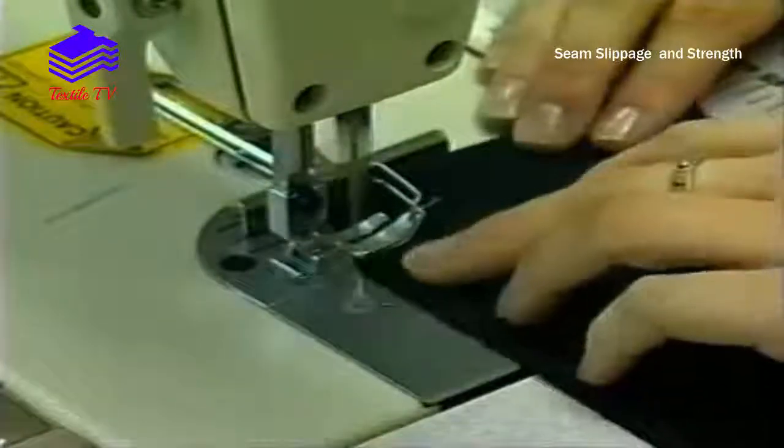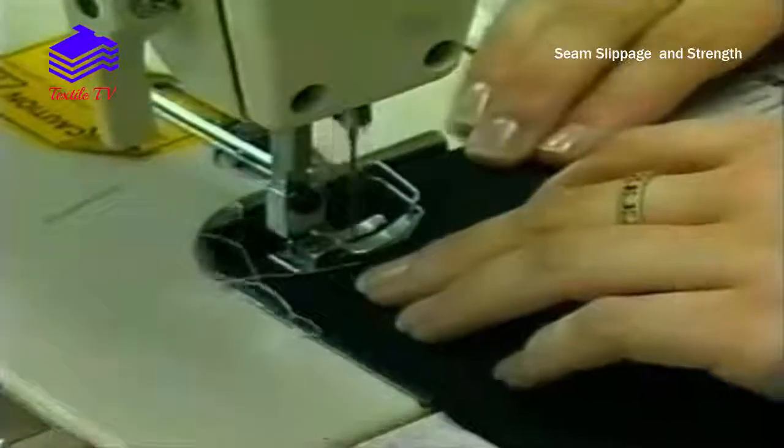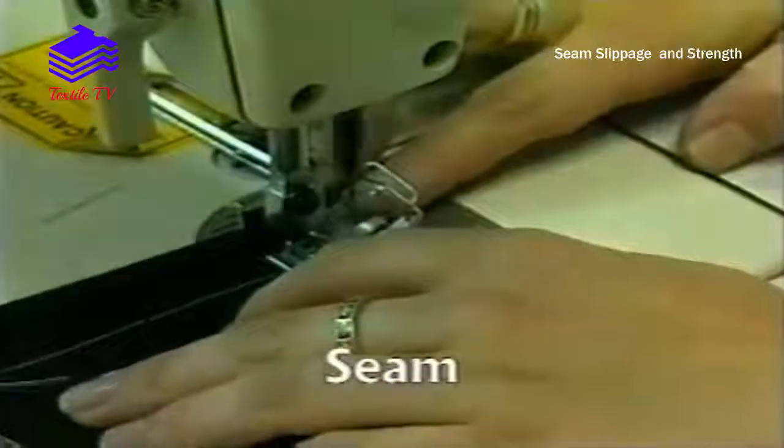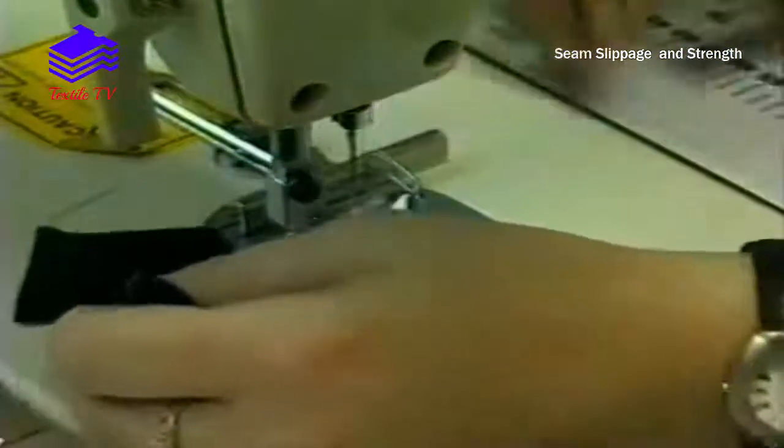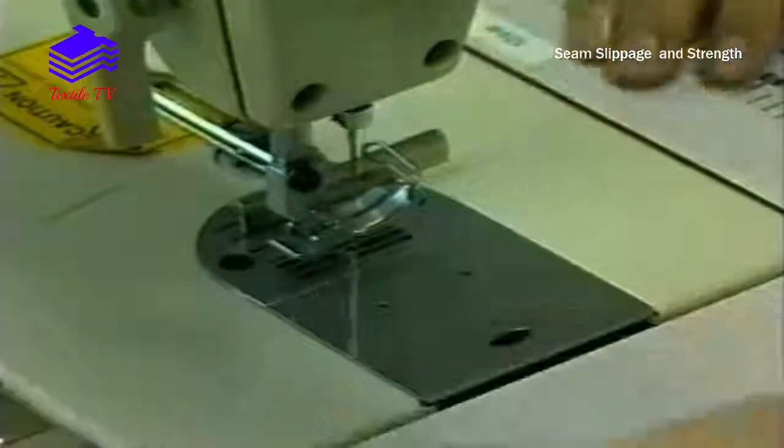Seams are prepared using a specified sewing thread, style of needle, type of seam and seam allowances, and number of stitches per unit length.